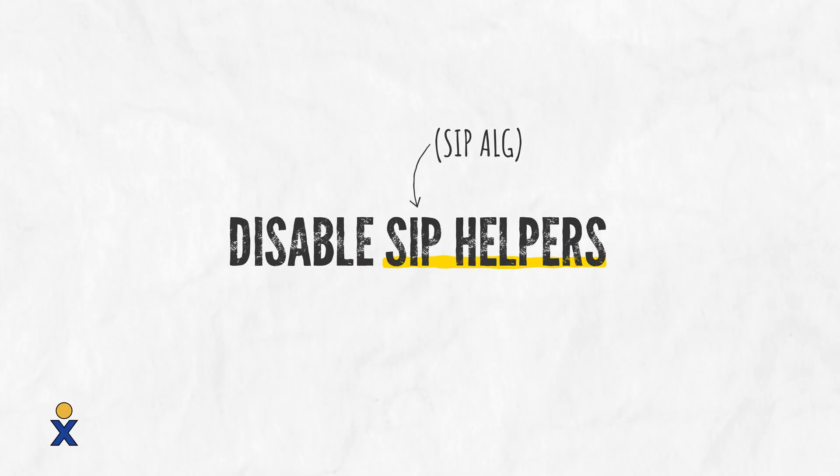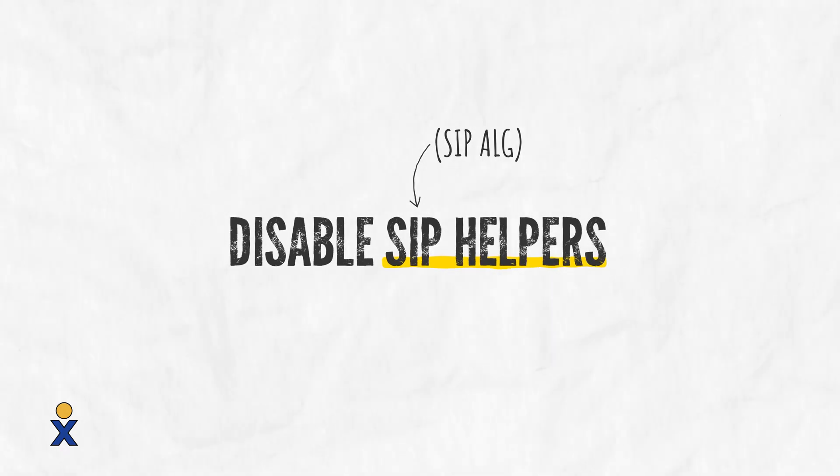Next, let's log into your router and disable all of the SIP helpers, especially SIP-ALG. These features attempt to fix VoIP issues, but they tend to cause more issues than they fix, and they don't really help the majority of business use cases anyway. However, if you are dropping calls at 10 to 11 minutes consistently, SIP-ALG might be the cause.